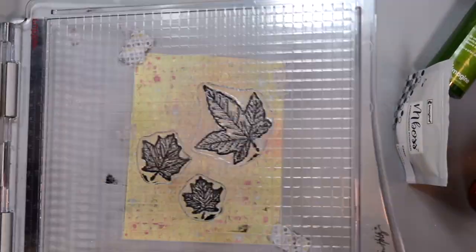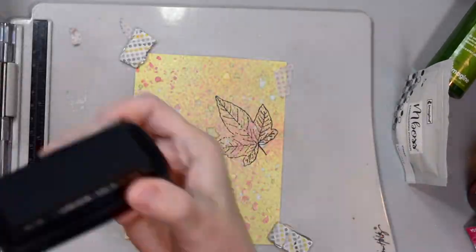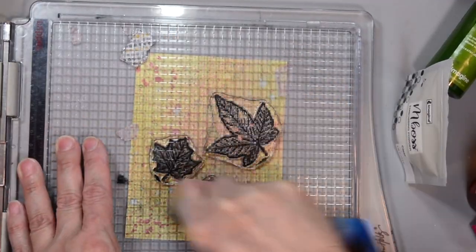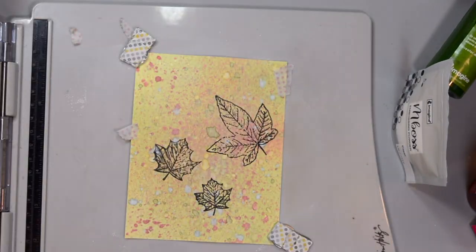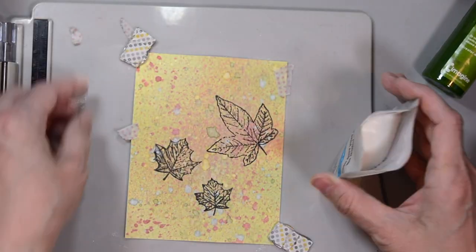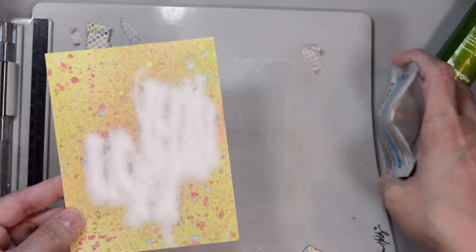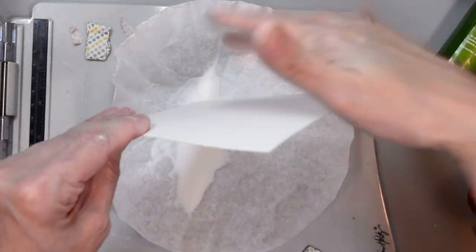So I put some anti-static powder down so that I can stamp my leaves with the VersaFine Clair Nocturne ink because I'll be embossing them with the clear embossing powder. I stamped it a couple times just so that I can get all the details in and get that nice rich black color that I want. I'm going to put some embossing powder on there, shake off the excess, and then I'll heat set it with my heat tool.